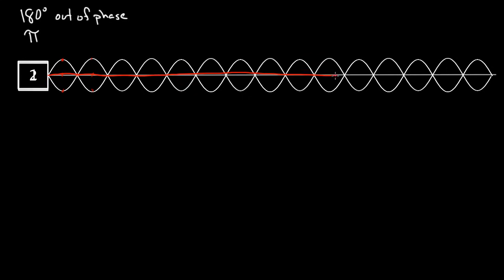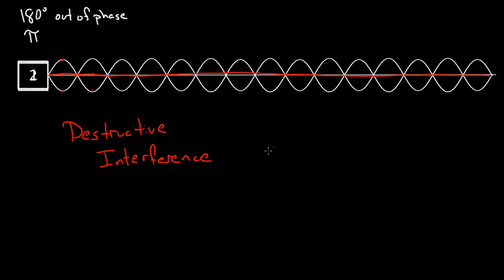These two waves cancel, so we call this destructive interference, because they've destructively combined to form no wave at all. This is a little strange — how can two waves form no wave? If I just had one speaker, I'd hear a noise. If I just had the second speaker, I'd hear a noise. But if I have both the first and second speaker together, I don't hear anything. It's silent, which is hard to believe, but this works.